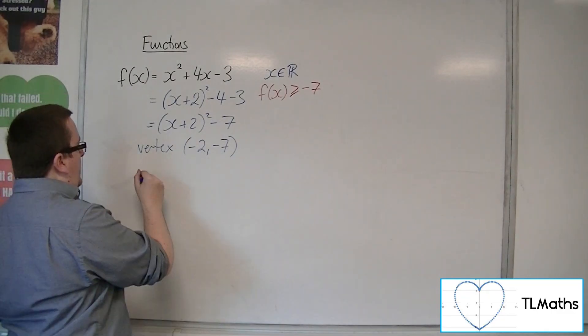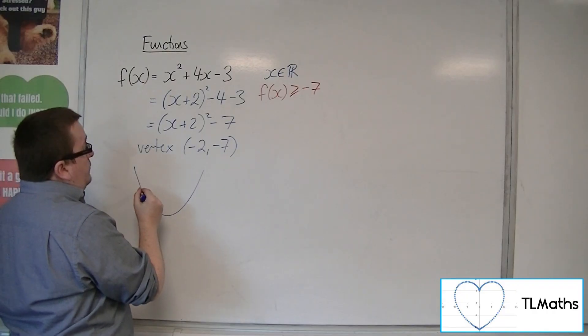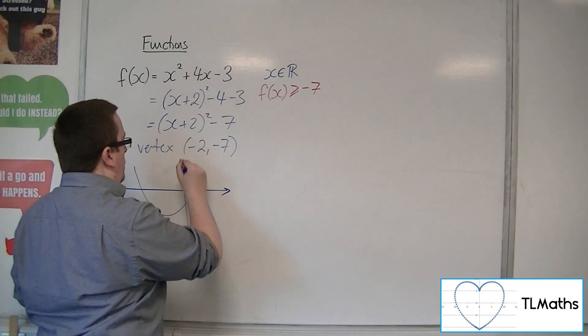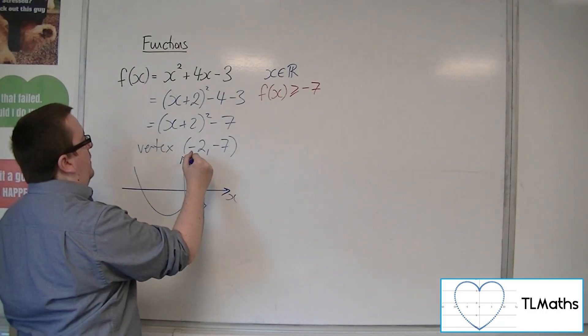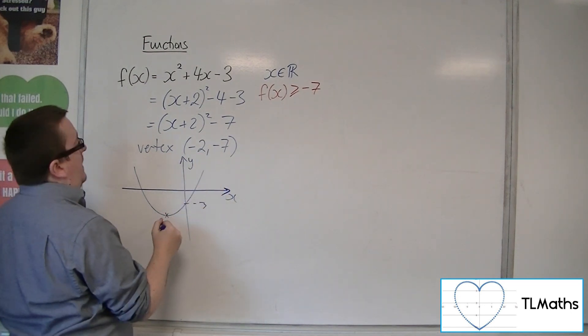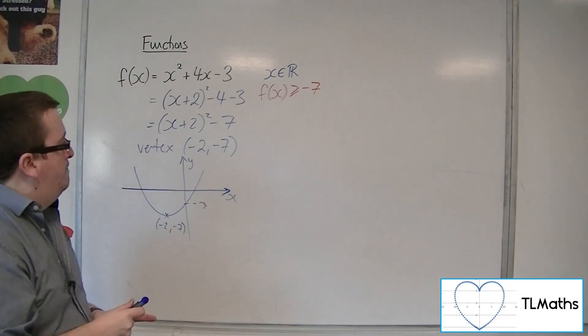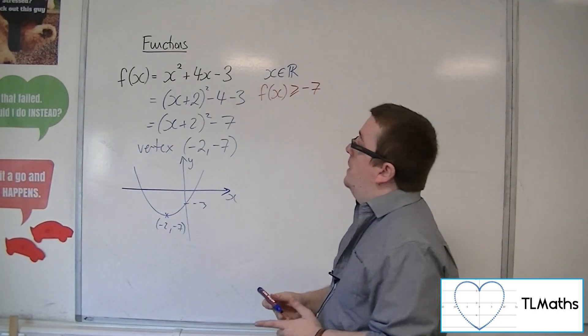So visually what's happening is that we've got this parabola where, if I put in an x-axis and a y-axis, there's -3, there's x, there's y, and there's my vertex, (-2, -7). So that's its domain, that would be its range.